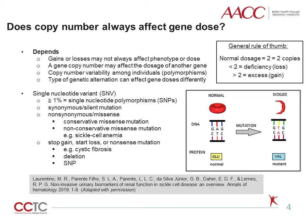The number of repeats varies between individuals, and we call these polymorphisms. Different gene alterations result in different gene dosage effects. For example, single nucleotide variants, or SNVs — as the name implies — is when a single nucleotide is substituted for another. The image shows the single nucleotide substitution of adenine to thymine. SNVs can be rare in one population but common in another. When a SNV is present in at least 1% of the population, it is referred to as a single nucleotide polymorphism, or SNP.